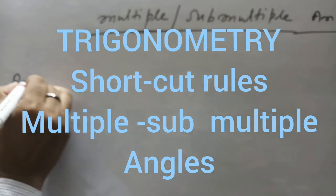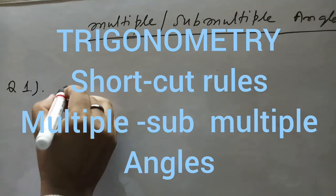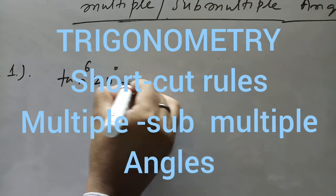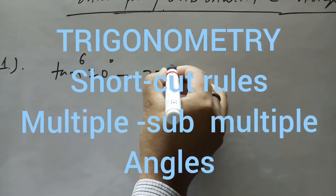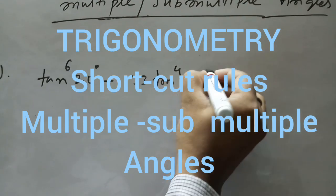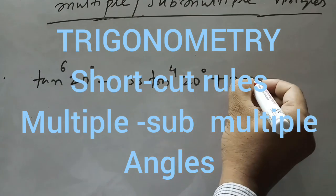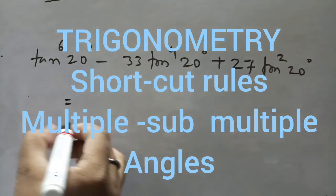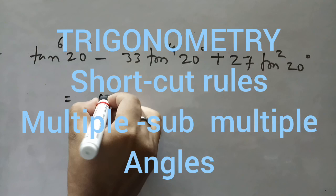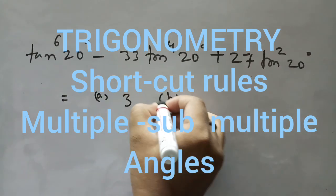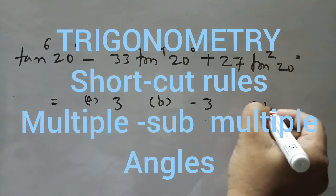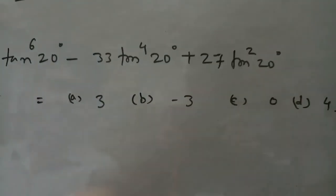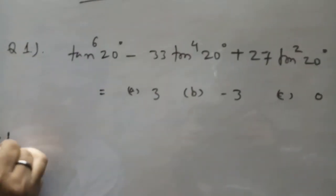Question number 1: 10 power 6 of 20 degree minus 33 times 10 power 4 of 20 degree plus 27 times 10 squared of 20 degree — what will be the value? Option A is 3, option B is minus 3, option C is 0, option D is 4. The solution will be as follows.